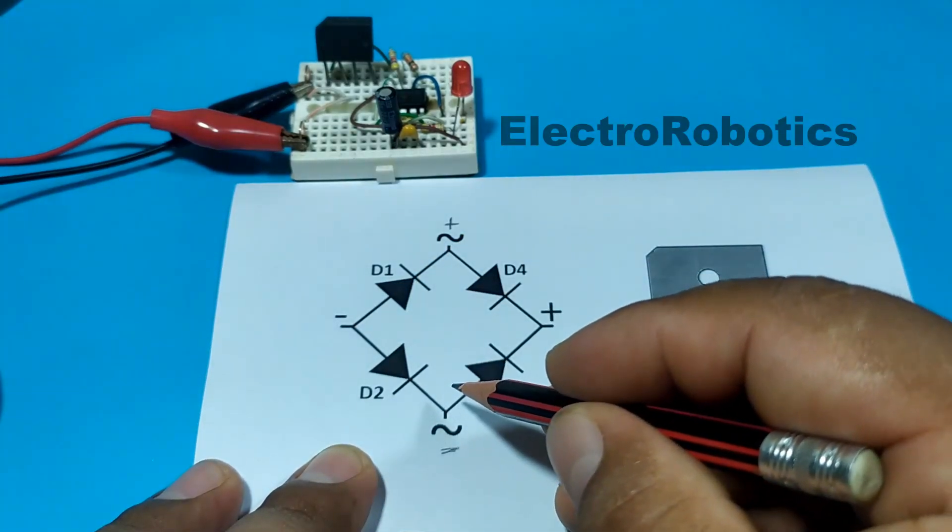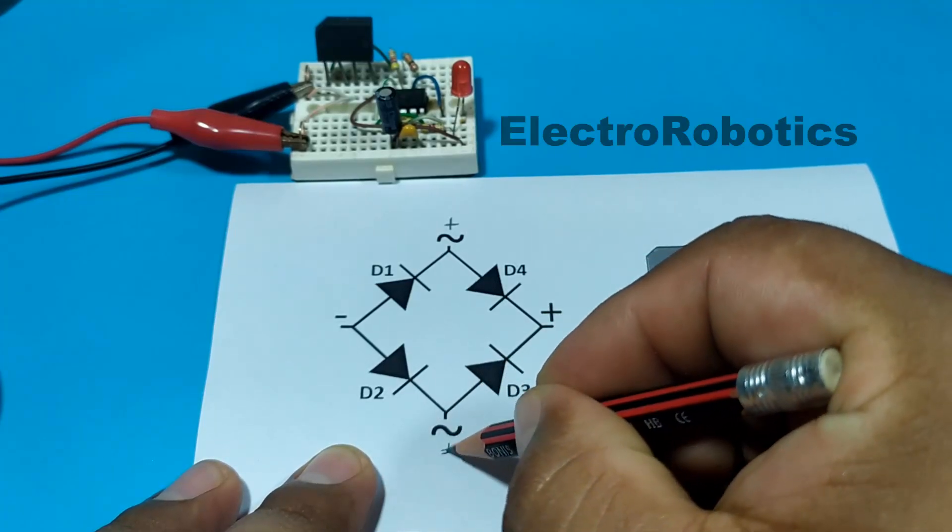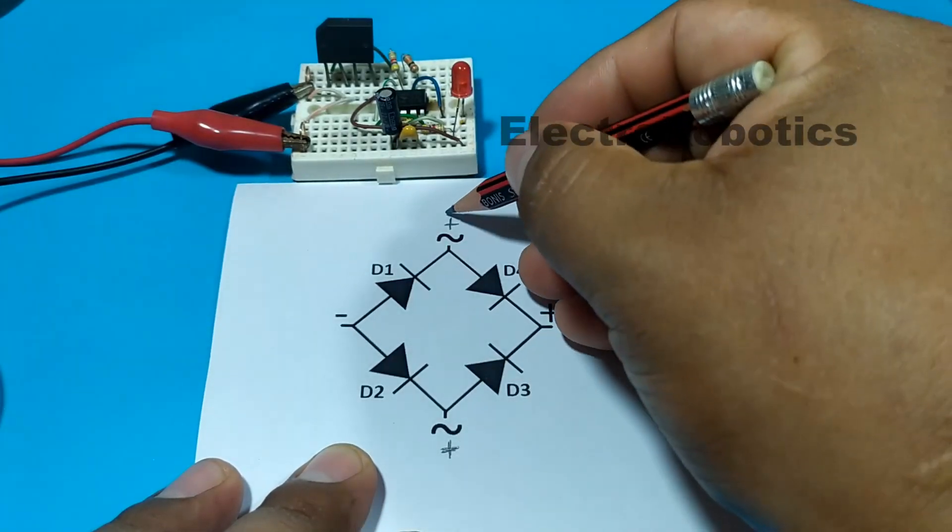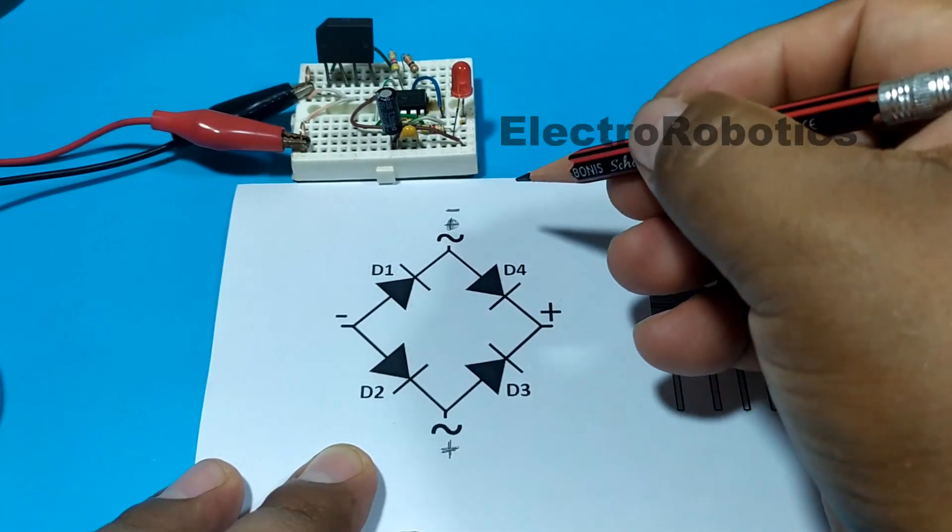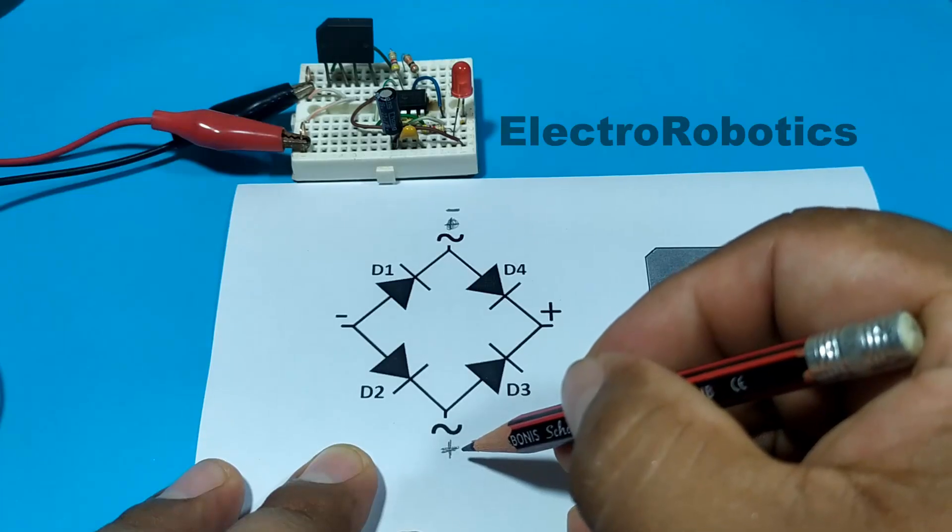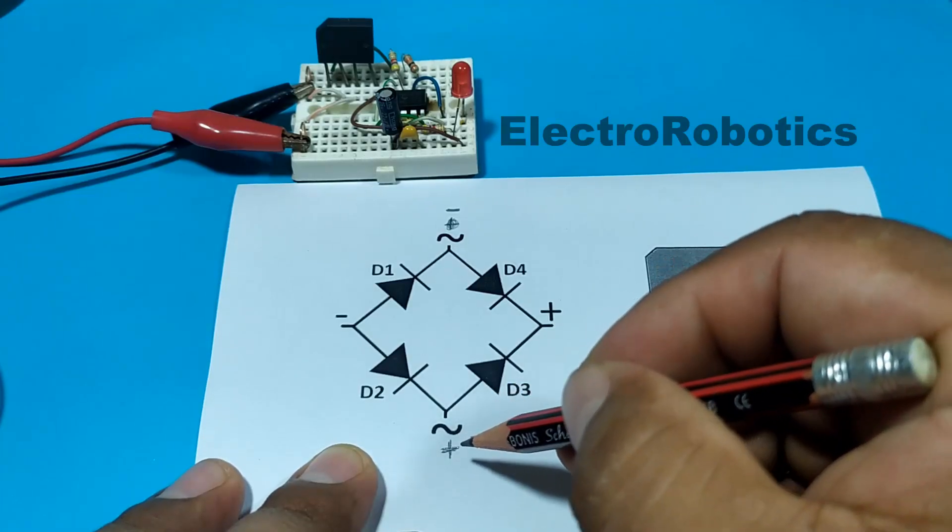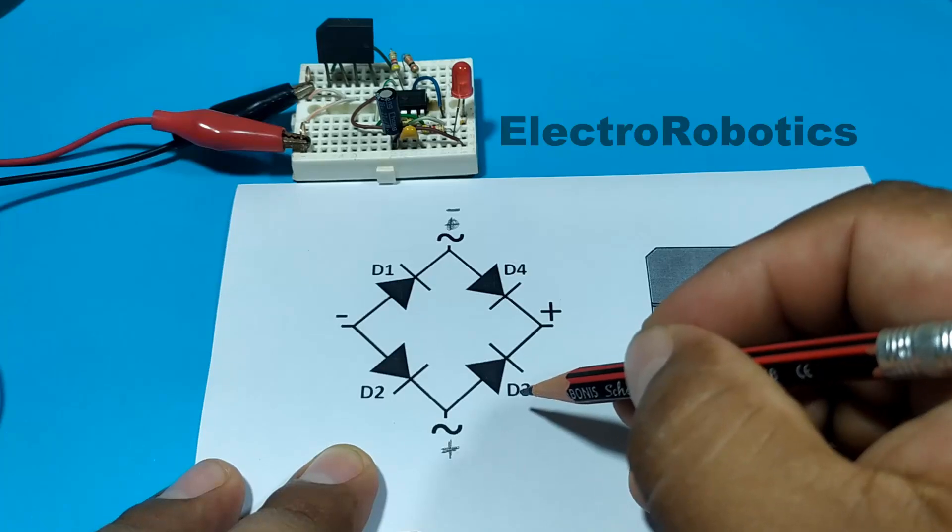Now what happens if you reverse the polarities? When you put positive here and put negative on top. Negative on top and positive on bottom. Well at that moment D3 will be able to conduct positive.